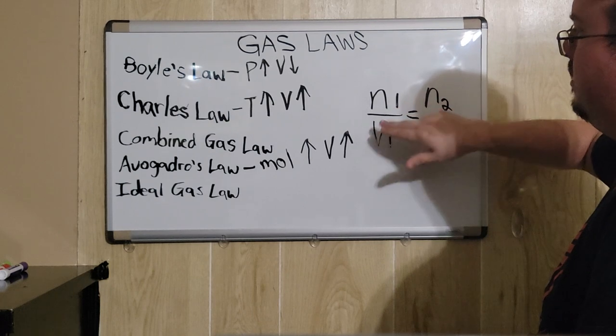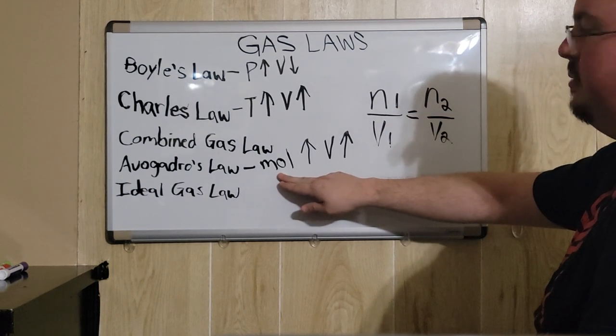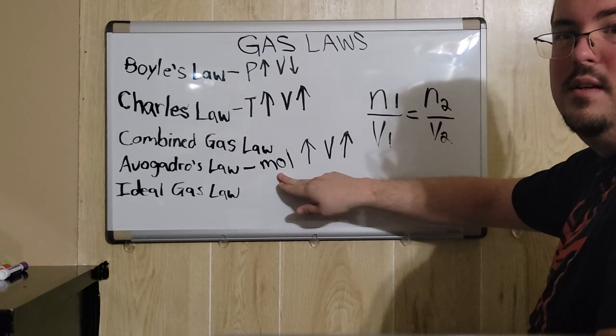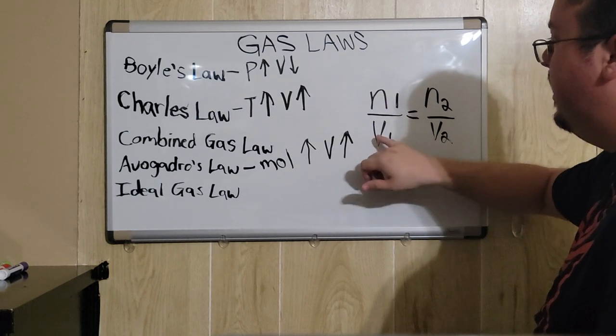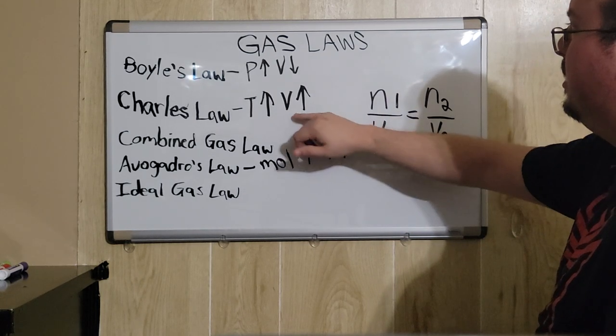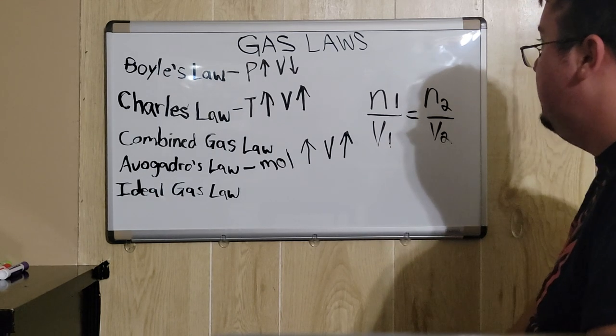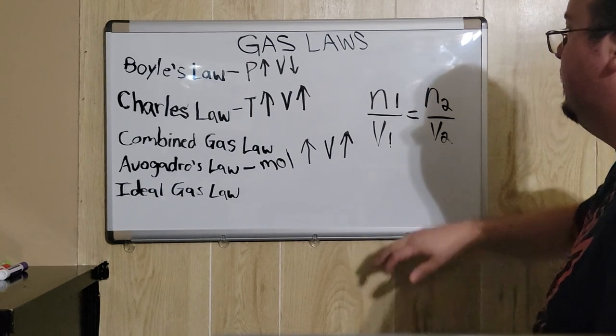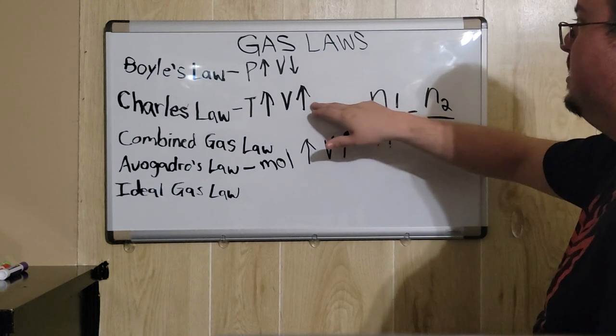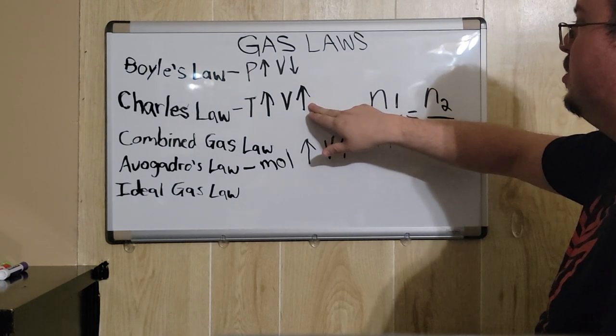Where N represents the number of moles of the gas, and V as before represents the volume. The relationship is essentially similar with Charles law.